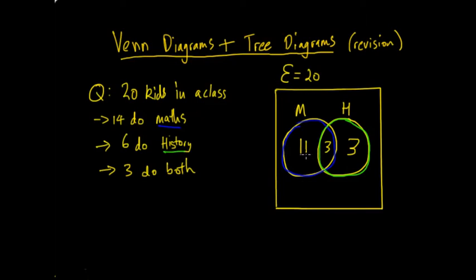Now, there are 20 kids, and if you add those up, there's 11 plus 3 plus 3, so that's 17. So, that means there are 3 kids that neither do maths or history. But they're still part of the set. As we've said, the set is the class. So, the class relates to the set or the sample space.